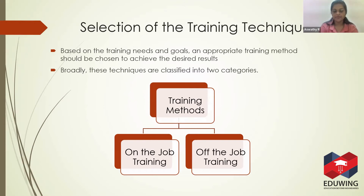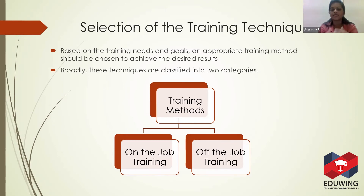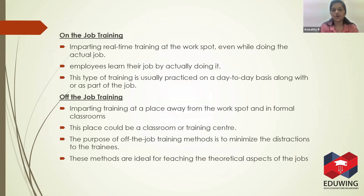Step three is the selection of training techniques. Once you have identified the need and developed objectives, the next step is choosing which method to use. There are two types of training technique: on-the-job training and off-the-job training. The name itself defines them. We will look at both methods now.